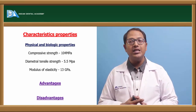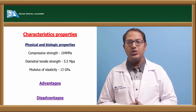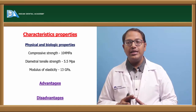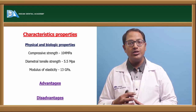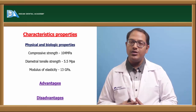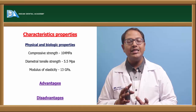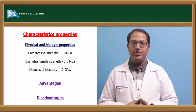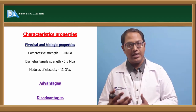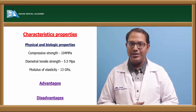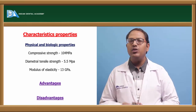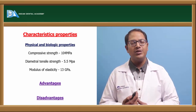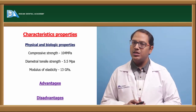Disadvantages of zinc phosphate include pulp reaction due to the initially acidic pH, high solubility in oral fluids, potential for pulp irritation, allergenic components that can cause reactions to the tooth and gingiva, and lack of any anti-cariogenic effect — it has no cariostatic activity. Despite this, it is still used for luting orthodontic braces and permanent restorations.